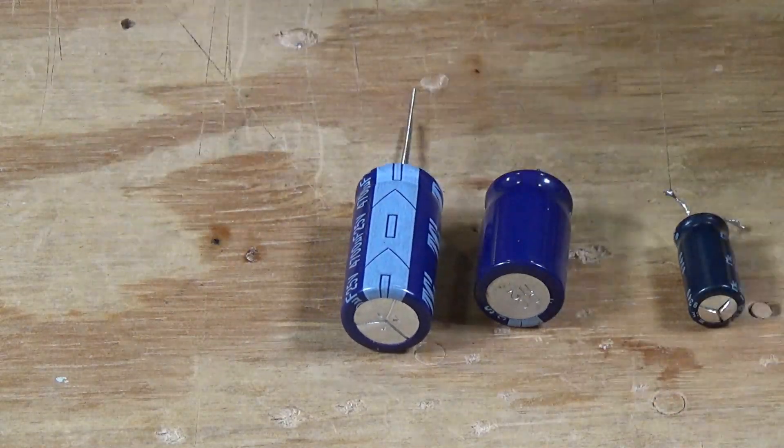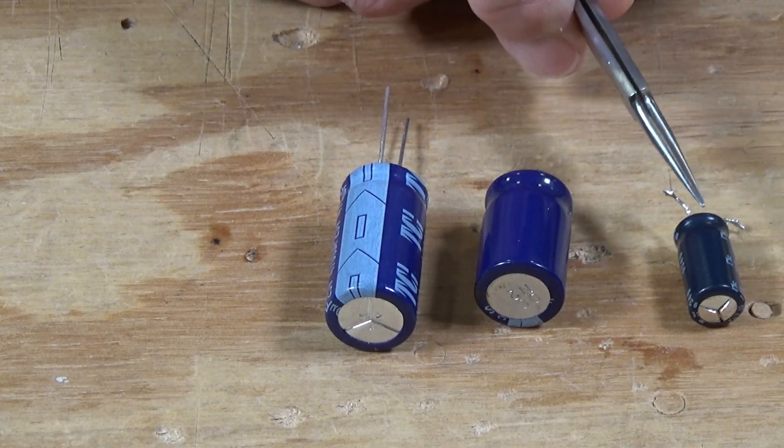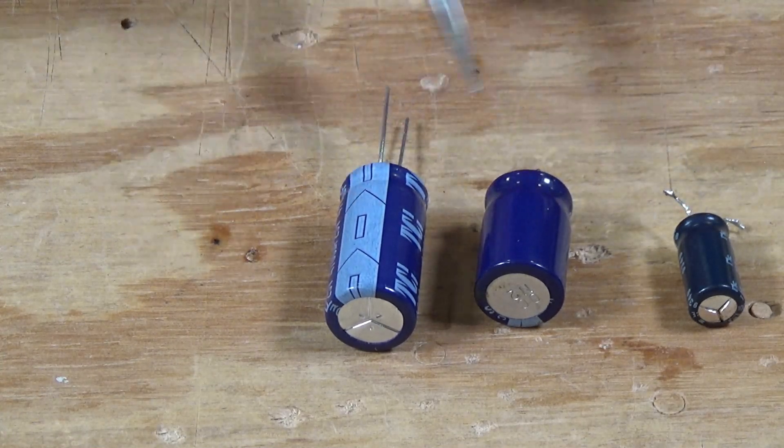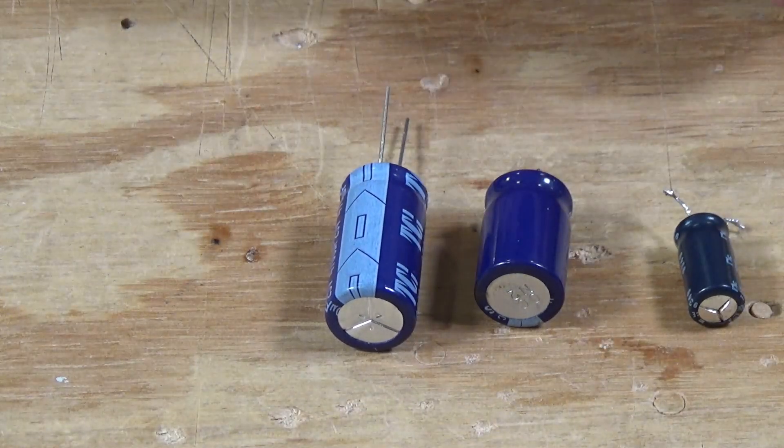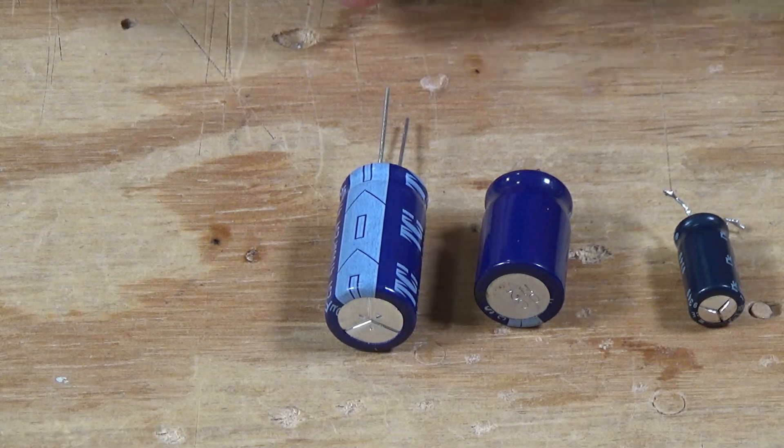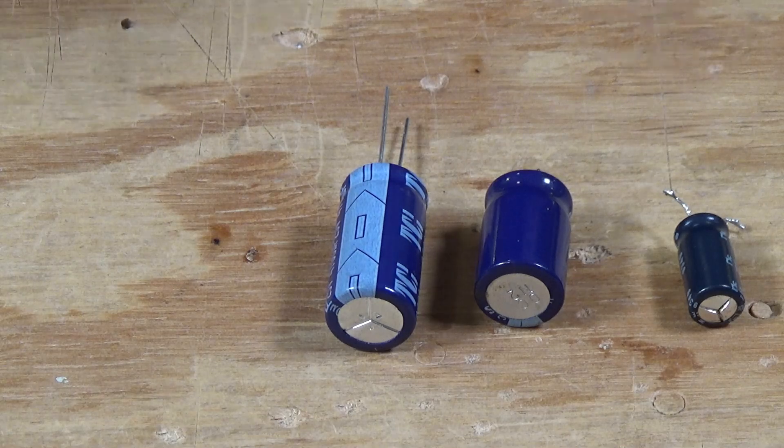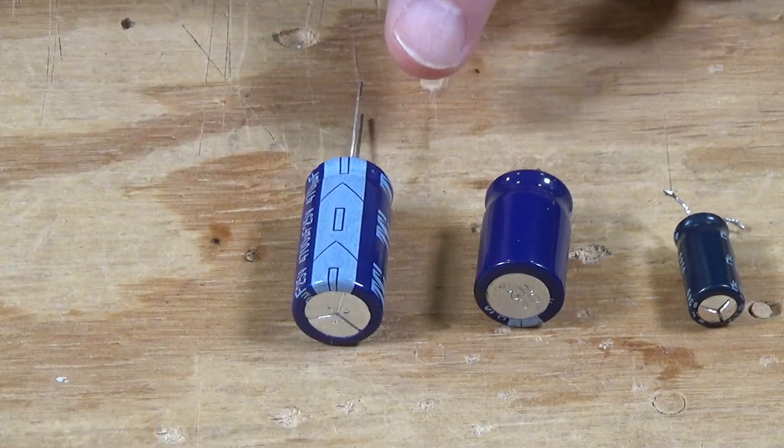Well, basically that microfarad rating just indicates how much energy is stored in each of these. And that will tell you how long, basically, you can keep a light lit once power is removed from the truck. You don't need one of these big ones in most cases.